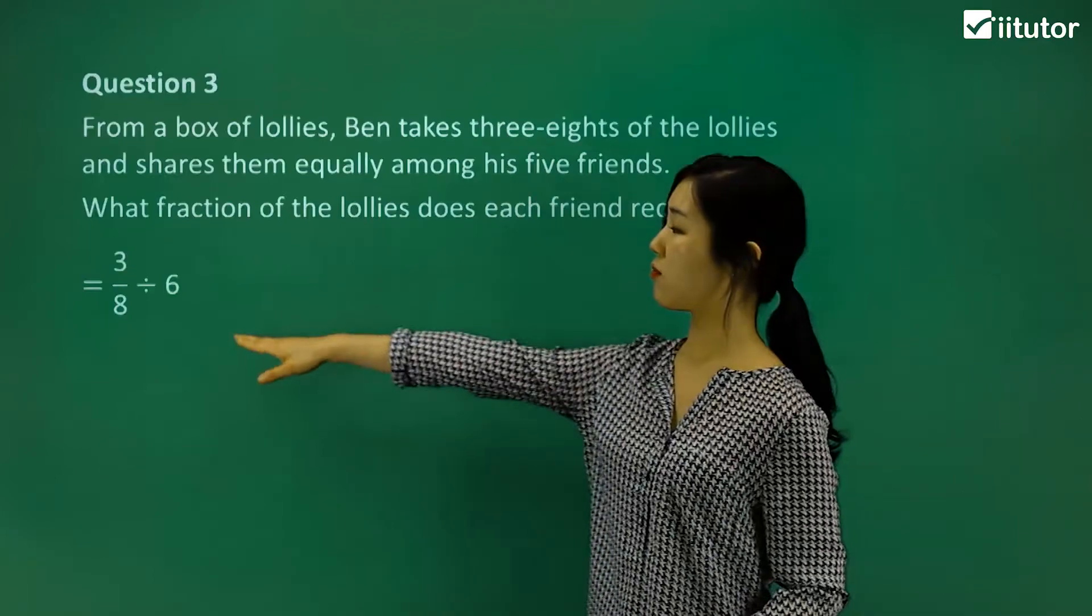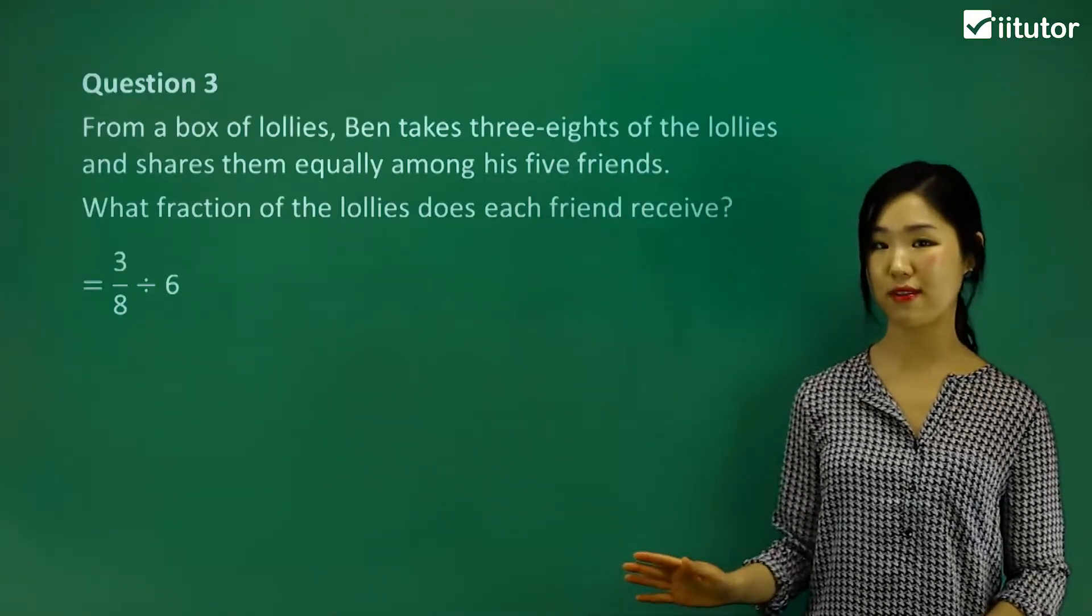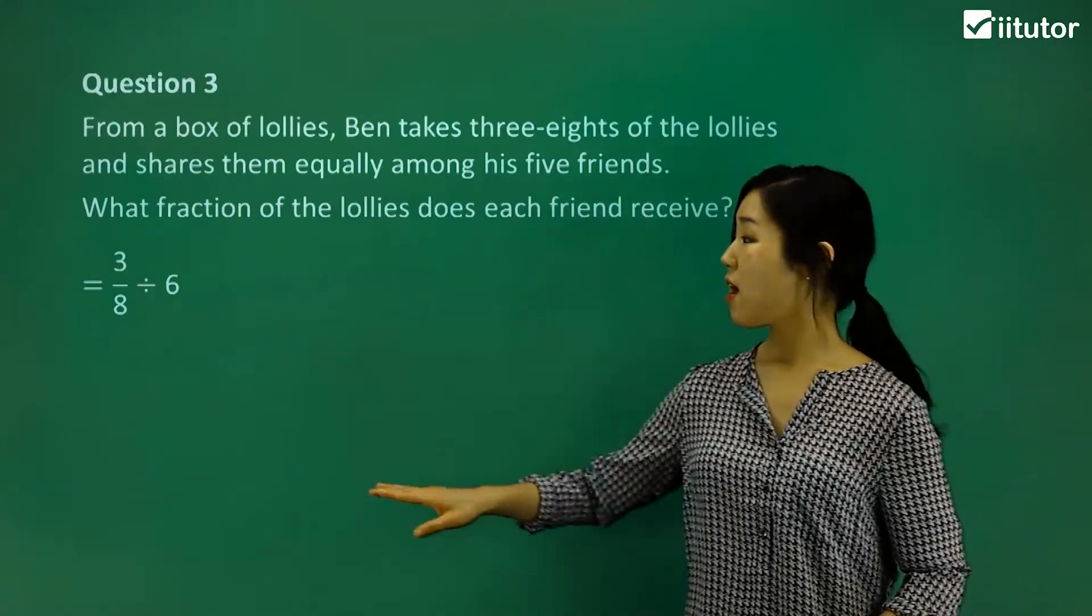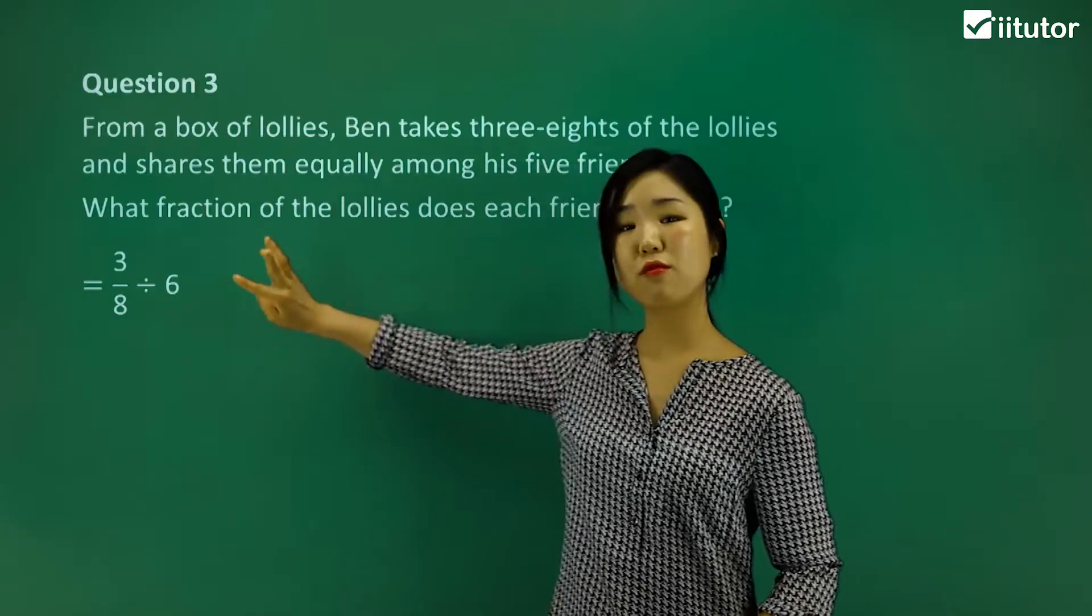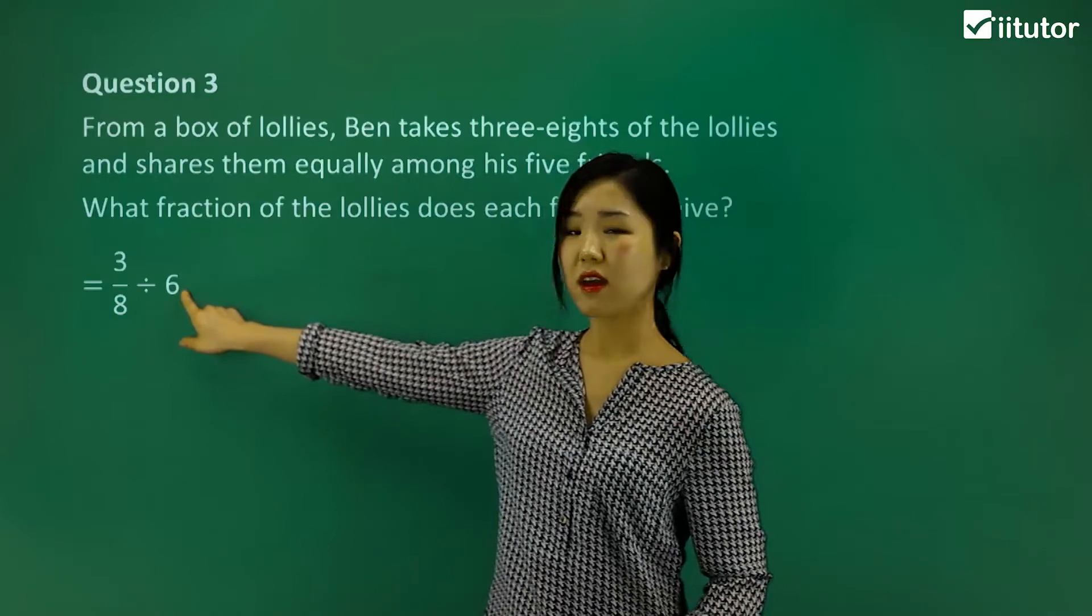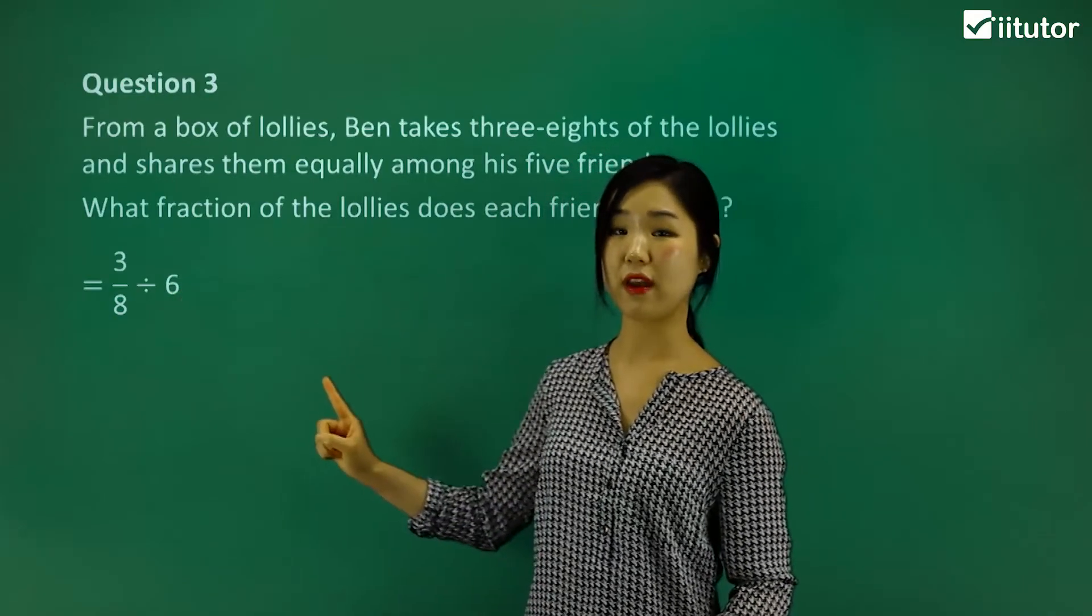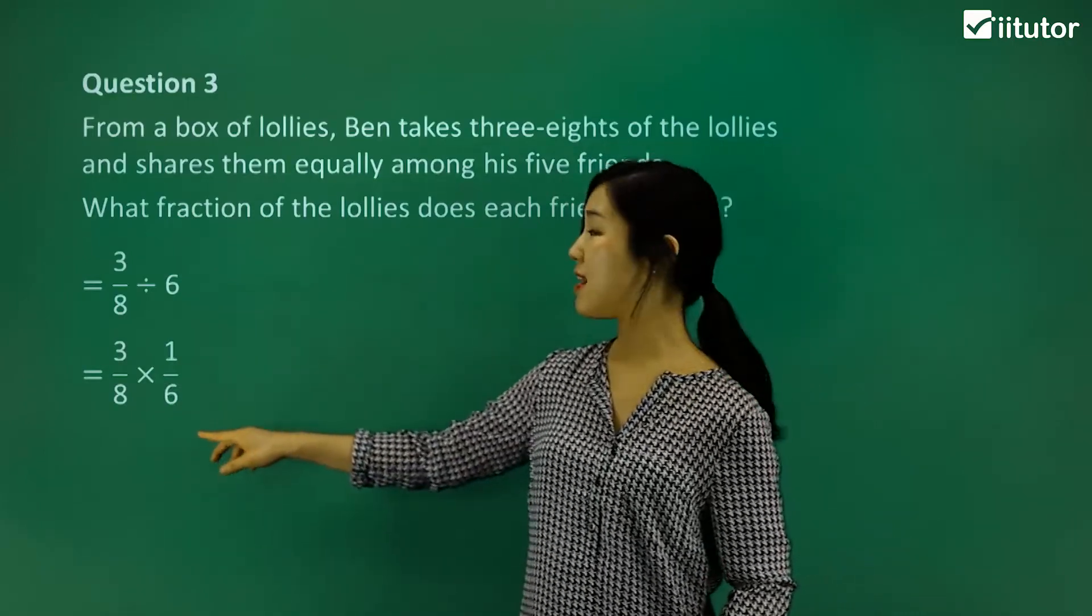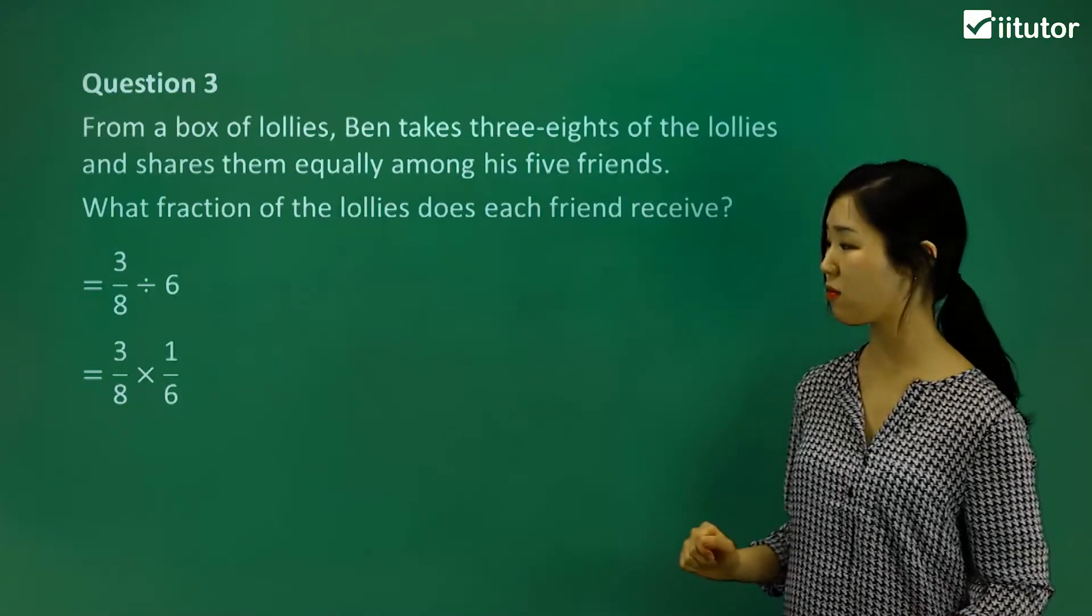Three-eighths is how much lollies we have. We're going to divide that equally by six. Remember the division rule of fractions? When we're doing a fraction divided by some number, we reciprocate the second number. The six, a whole number, basically has a denominator of one. So if I reciprocate it, it's going to be one over six. And now you can change the division to multiplication.